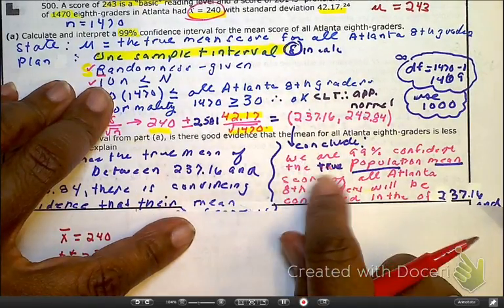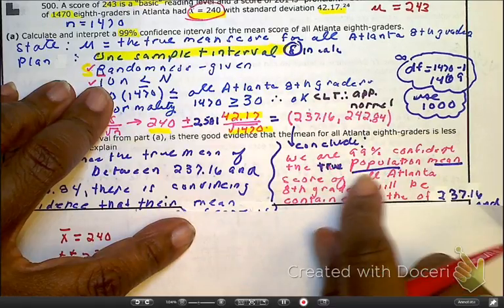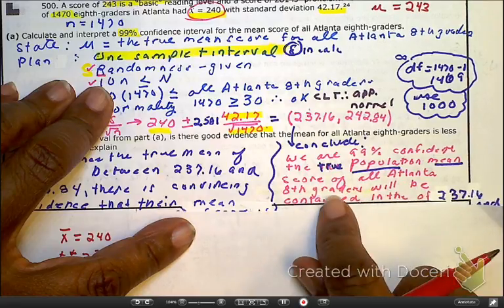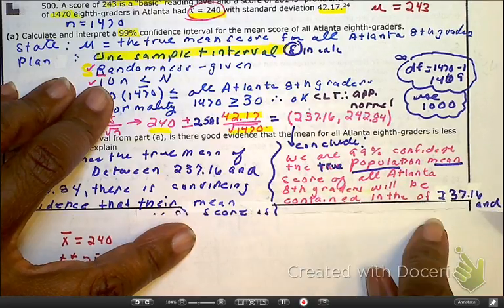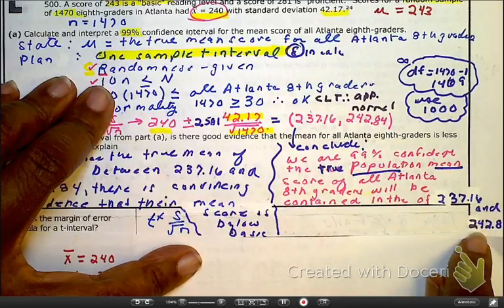Here is your conclusion. So we are 99% confident that the true population mean of the scores of all Atlanta eighth graders will be contained in the interval between 237 and 242.